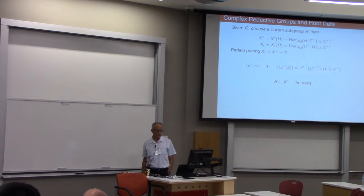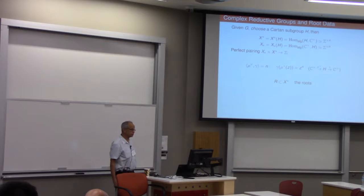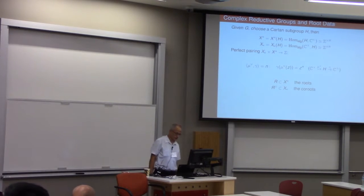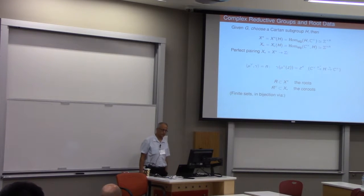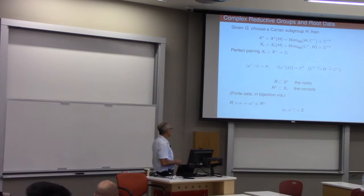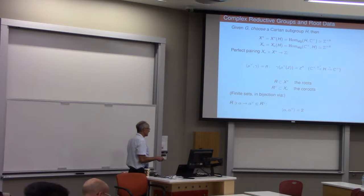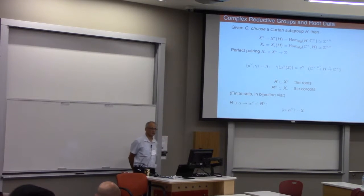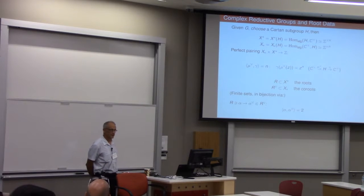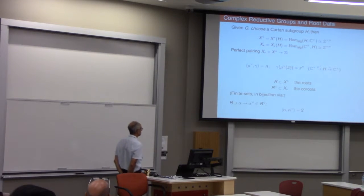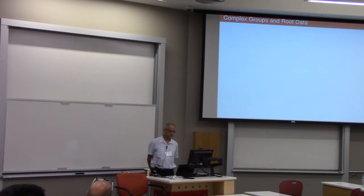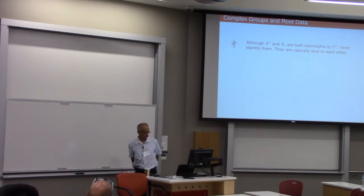And contained in X upper star is the set of roots. And contained in X lower star is the set of co-roots. And these are both finite sets and they're in bijection by a map alpha goes to alpha check. And among other things, this map satisfies this condition, and of course I violated my convention here by writing it in the other order. Alpha paired with alpha check is equal to two.